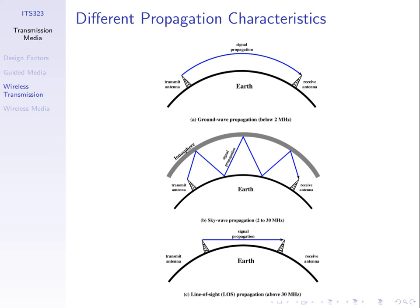Above around 30 MHz we have what's called line-of-sight (LOS) propagation. The signal goes straight, which means to receive it we need no obstructions between transmitter and receiver. If using LOS propagation, an antenna in Thailand and a receiver in Europe will not be able to communicate because the curvature of the earth is an obstruction. But with the first two approaches, they would be able to communicate.